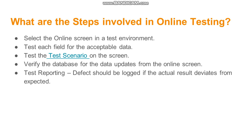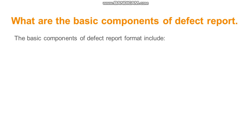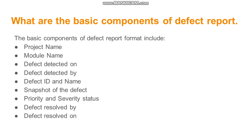What are the steps involved in online testing? It is straightforward: test each field with acceptable data, test the prepared scenarios, verify the data and database updates on the online screen, and log any defects found. A common interview question is: what are the basic components of a defect report? A defect report should include the project name, module name, date detected, detected by, defect ID, defect name, a screenshot of the defect, priority, severity, resolved by, and resolved-on date.